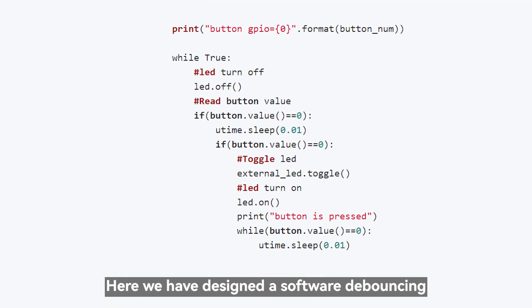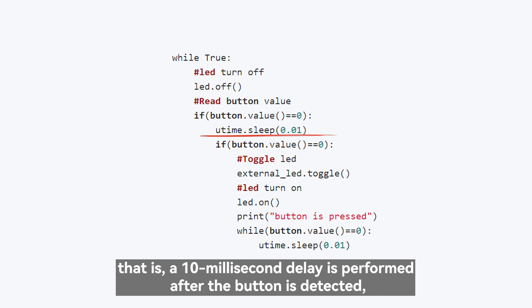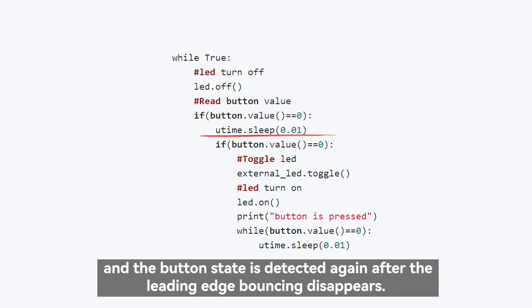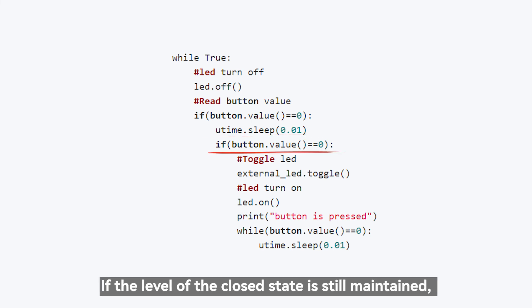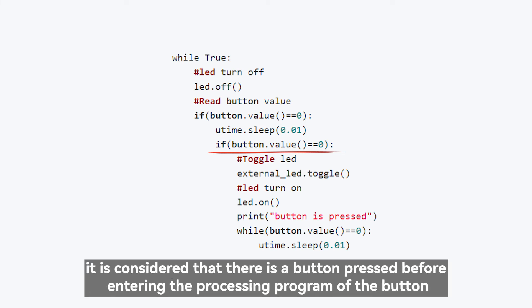Here we have designed a software debouncing, that is, a 10 millisecond delay is performed after the button is detected, and the button state is detected again after the leading edge bouncing disappears. If the level of the closed state is still maintained, it is considered that there is a button pressed before entering the processing program of the button.